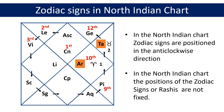Now suppose if the sign of the ascendant or lagna was Leo or Simha instead of Cancer or Karka, then Leo would have been placed in the first house. Following the zodiac sign order, the 12th sign from Leo, which is Cancer or Karka, would have ended up in the 12th house. I hope you are now clear that the zodiac signs are not fixed in the North Indian chart and how these are placed in the chart.